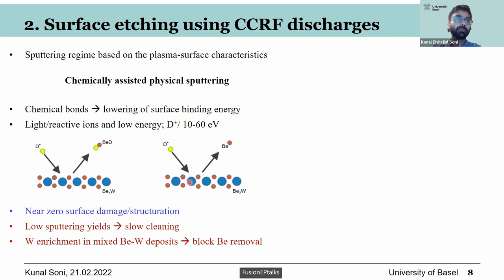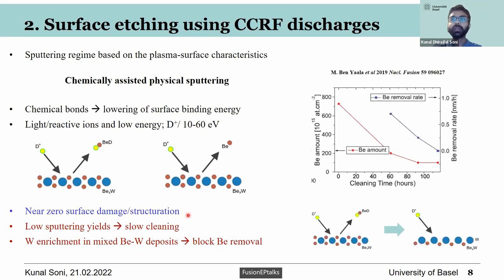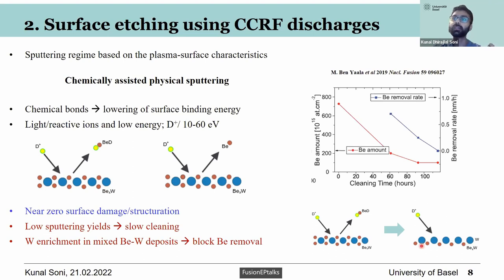One major problem we face with chemically assisted physical sputtering is tungsten enrichment. Most contamination on mirror surfaces is beryllium and tungsten, which can be mixed. When deuterium removes beryllium atoms from the surface, it can leave behind a tungsten layer that deuterium cannot remove. This tungsten layer then acts as a shield, blocking all the beryllium contaminants underneath it. This effect has been observed in our experiments — more details are available in the relevant paper.